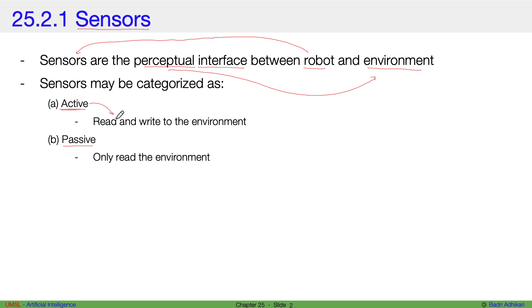Active sensors read and write to the environment. They throw something to the environment and they perceive something from the environment. Whereas passive sensors only perceive things from the environment.